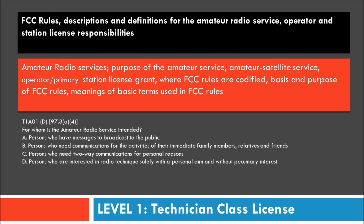Here's the type of question you're going to be seeing in this segment: For whom is the amateur radio service intended? A — a person who has messages to broadcast to the public; B — a person who needs communications for the activities of their immediate family members, relatives, and friends; C — a person who needs two-way communication for personal reasons; D — persons who are interested in radio technique solely with a personal aim and without pecuniary interest.